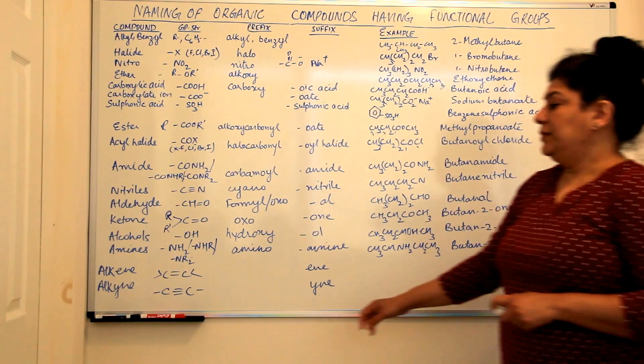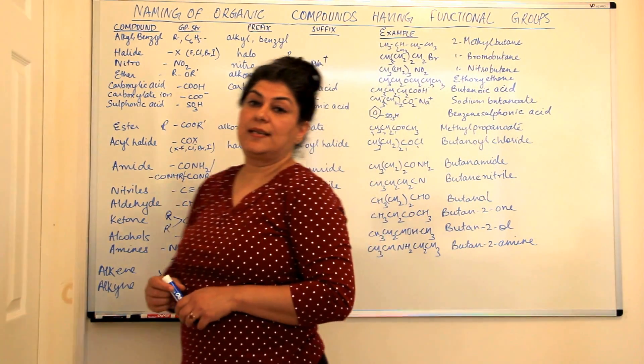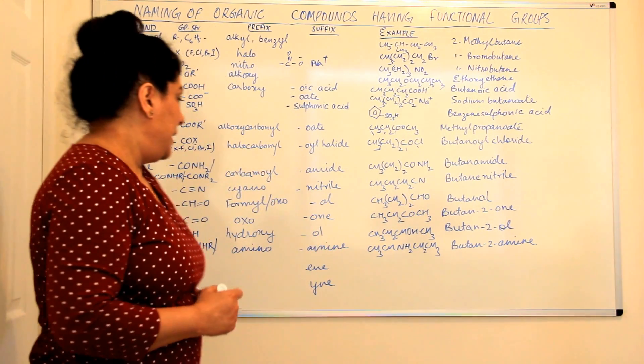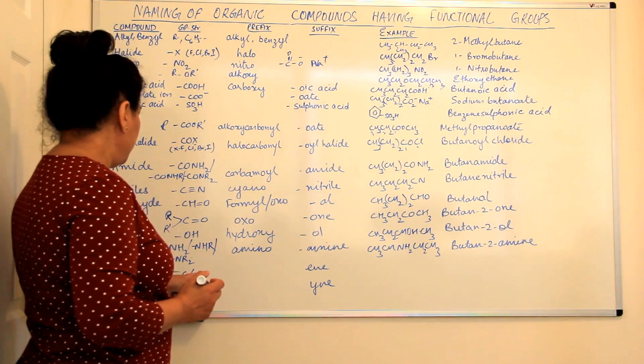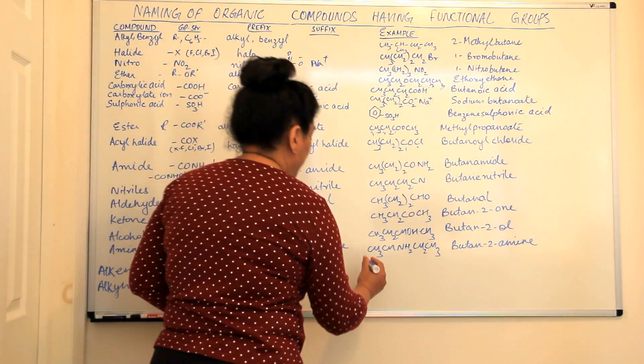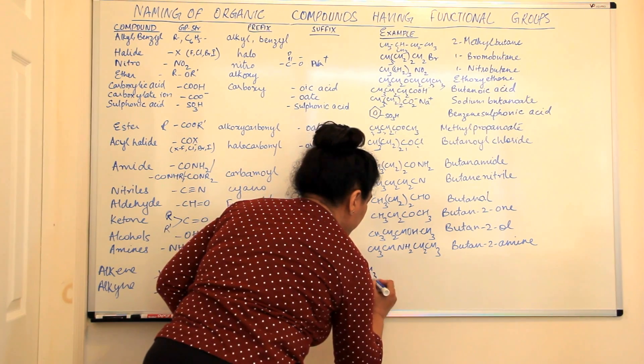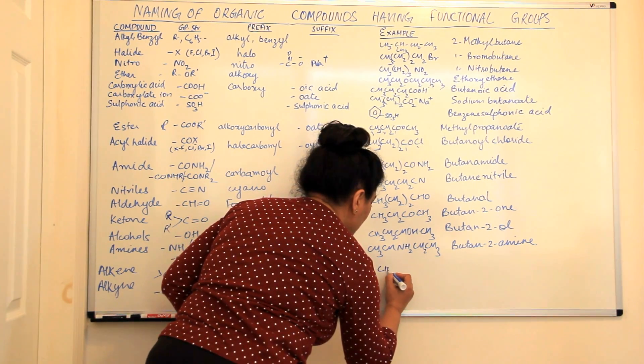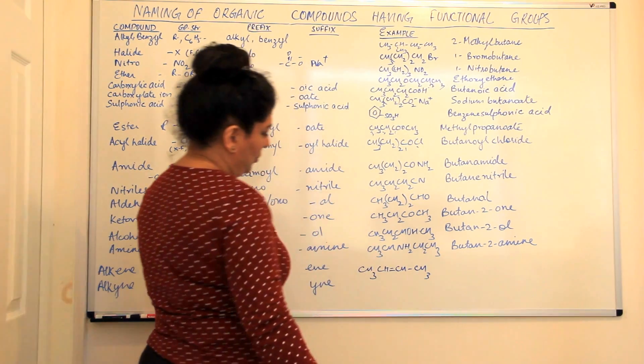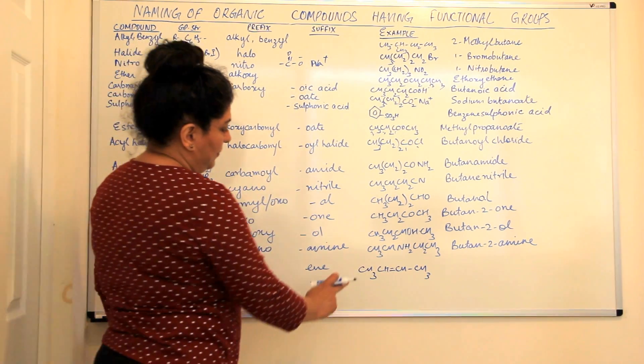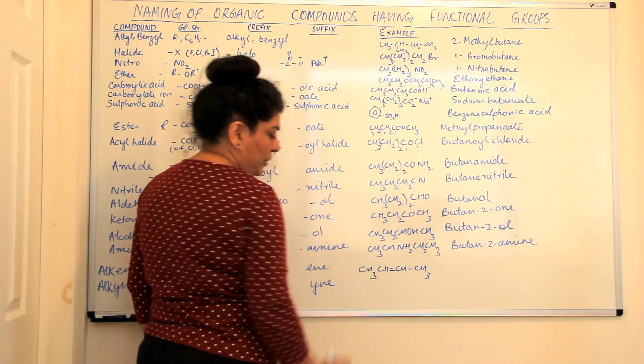After these come the alkenes and the alkynes, that is unsaturated hydrocarbons. And whatever is the position of unsaturation, alkenes, for example, if you have CH3, CH double bond, CH, CH3. So this would be but-2-ene.